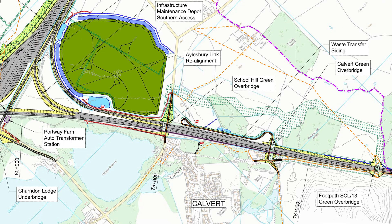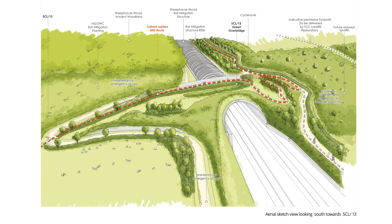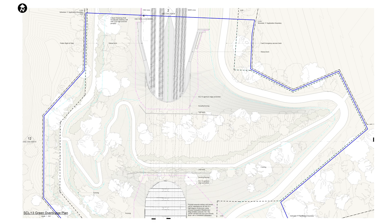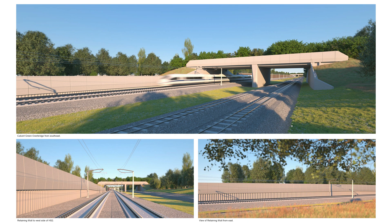We now reach the final section covered in this video, before the line intersects with East-West Rail, and there are three overbridges to cover here. The first structure we come to is SCL13 Green Overbridge, which is integrated into the northern part of Sheep House Wood Bat Mitigation Structure. In this overhead plan, we can see the Bat Mitigation Structure at the bottom, and at the top the two pairs of tracks, which are starting to be spaced apart more as we approach the part where the tracks curve to join the East-West Rail line. These views show the bridge style is very similar to other ones, with those concrete parapets.